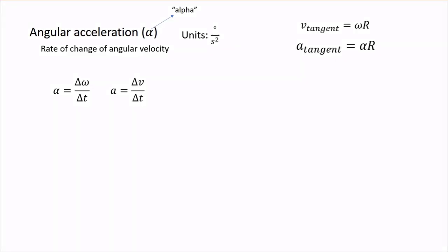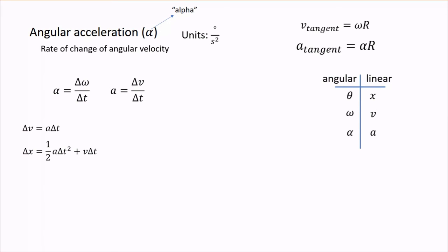Each of these angular quantities has a corresponding linear quantity. Angular position matches up to position, angular velocity matches up to linear velocity, and angular acceleration matches up to linear acceleration. When we have constant linear acceleration, we have two key equations: the change in velocity equals acceleration multiplied by time, and the change in position equals one-half times acceleration times time squared plus initial velocity times time. Those two equations hold true for angular motion as well — we just replace each linear term with its corresponding angular term. These analogies will be even more helpful as we work more with rotations.